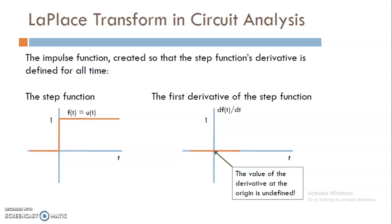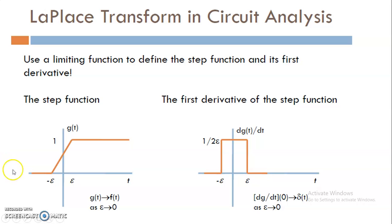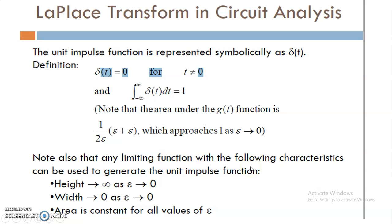How does differentiation of a function behave? If the function is the unit function u of t, its differential will be 1. If it is a ramp function — a function that is a multiple of t — then differentiation gives you a window function between minus eta and eta. The Laplace transform unit impulse function is represented by delta of t. Delta of t equals 0 for t not equal to 0, and the integral of delta of t from minus infinity to infinity equals 1.